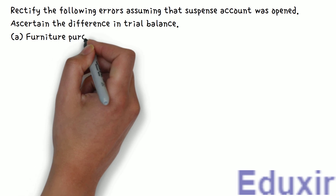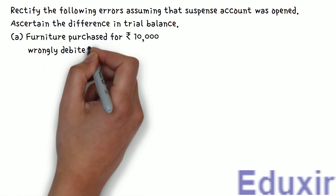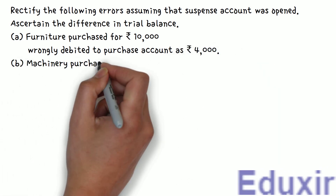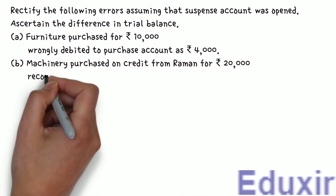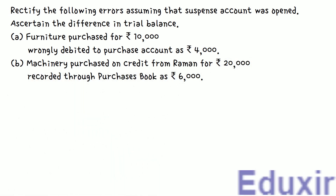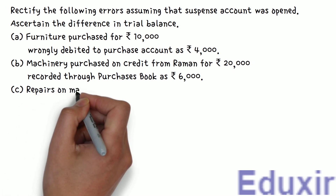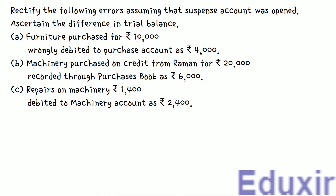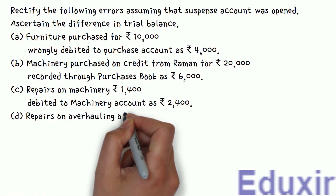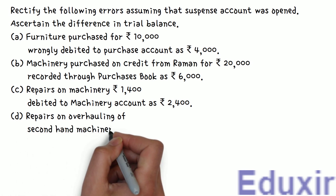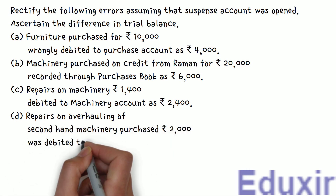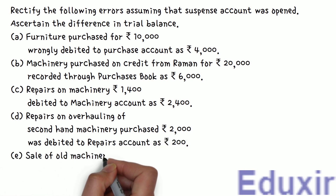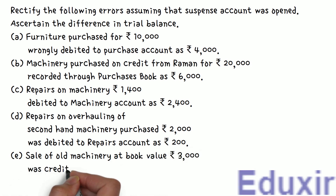A. Furniture purchased for 10,000 Rs. was wrongly debited to purchases account as 4,000 Rs. B. Machinery purchased on credit from Raman for 20,000 Rs. was recorded through the purchases book as 6,000 Rs. C. Repairs on machinery of 1,400 Rs. was debited to machinery account as 2,400 Rs. D. Repairs on overhauling of secondhand machinery purchased, 2,000 Rs., was debited to repairs account as 200 Rs. E. Sale of old machinery at book value, 3,000 Rs., was credited to sales account as 5,000 Rs.